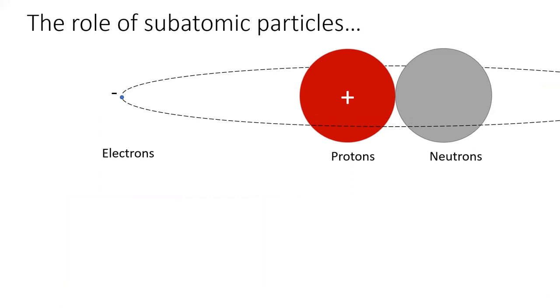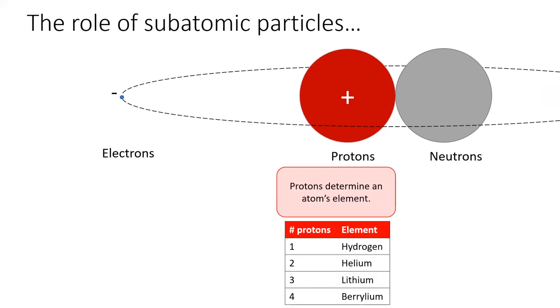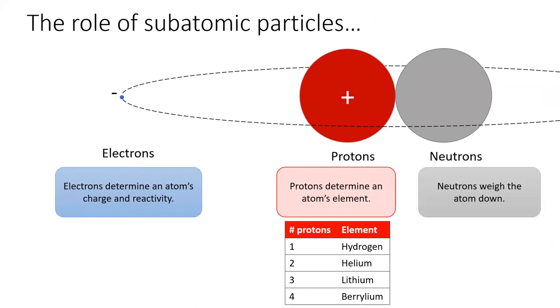In general, the role of each subatomic particle is as follows. The number of protons determines the atom's element. The number of electrons determines the atom's charge and reactivity. The number of neutrons determines the atom's mass.